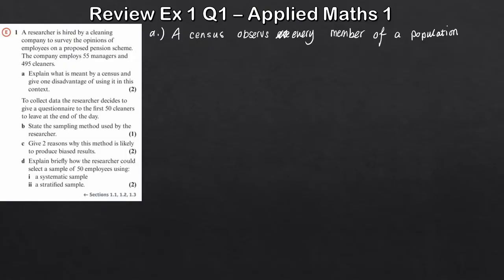The census in this country gets sent out to every household and you're required to fill it out. One disadvantage, as you can imagine, is that it is very time consuming, even for something along these lines where there's only 500 roughly people. So that's just our disadvantage there. That's part A done.